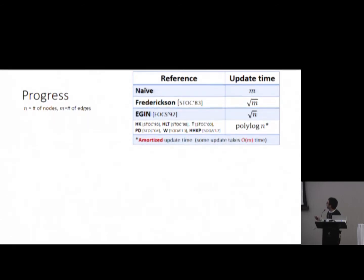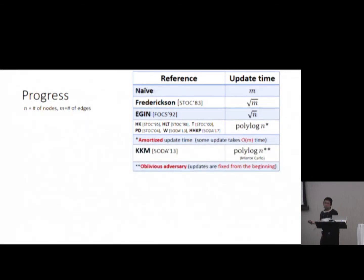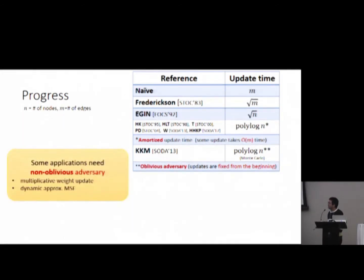There is a beautiful line of research that makes it polylog update time if the update time is amortized. That is, it is an average update time throughout a sequence of updates. Basically, some updates can take long time, linear time, but on average it's fast. And also, Kapron, King, and Mulmuley have some breakthrough. They get worst case polylog time, but when the adversary is oblivious. Basically, it just means that all the updates are fixed in the beginning. But for some applications, we need non-oblivious adversary.